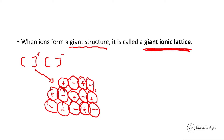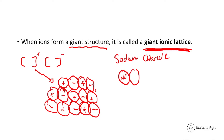For example, if we take sodium chloride: sodium forms a positive ion and chlorine forms a negative ion. Millions of these sodiums and chlorines bind together to make a giant ionic lattice. It is the electrostatic force between them that forms the ionic bond — that's important for the next part.